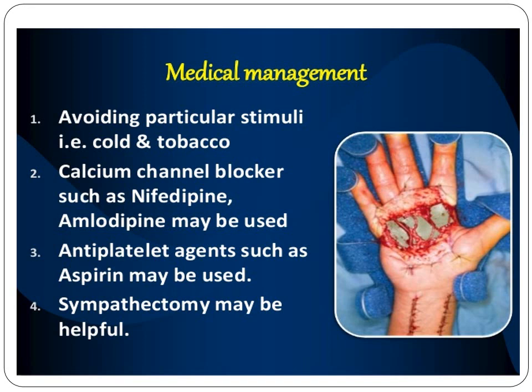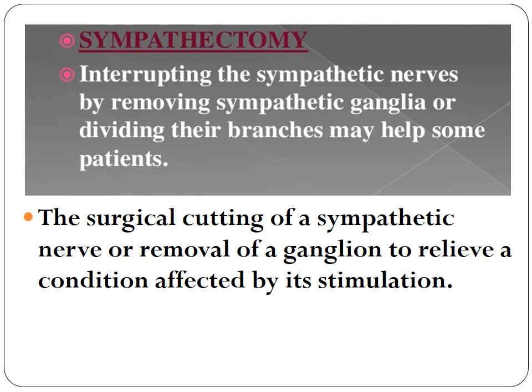The medical management for Raynaud's disease includes avoiding the stimuli — whatever the etiological risk factors are, you avoid them. Make sure whatever medications you are on are used appropriately, and if you are having pain you may need to be on aspirin. For clotting disorders, blood thinners and anticoagulant medications are used. Sympathectomy — related to the sympathetic nerves — involves removing the sympathetic ganglia or dividing the branches, which may help some patients. This is a surgical procedure involving cutting of a nerve or removal of ganglia to relieve the condition.